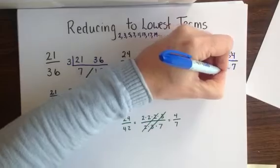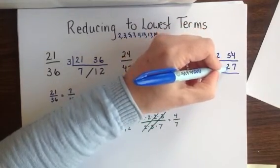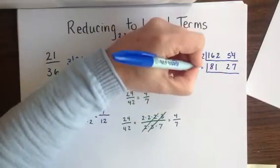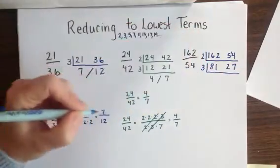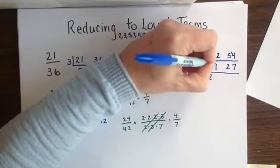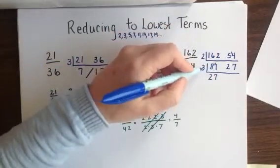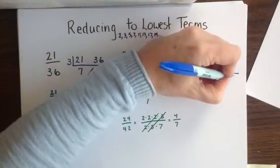81, with the sum of 8 plus 1 being 9, and 27, 2 plus 7 also being 9, tells me that both of these numbers will divide by 3. 3 fits into 81 twice with 2 remaining, and into 21 seven times. 3 fits into 27 nine times.